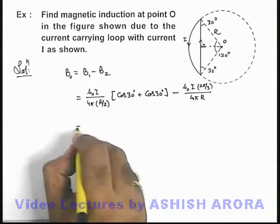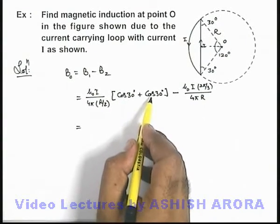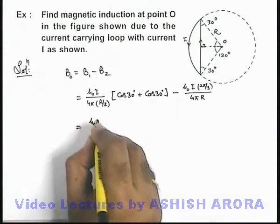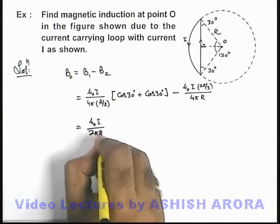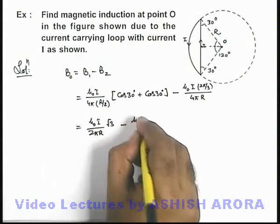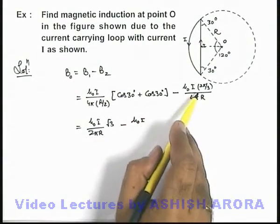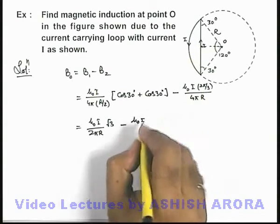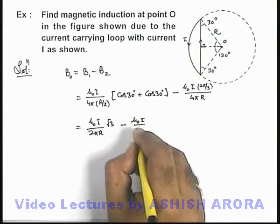Now if we further simplify the results, 2 cos 30 degrees will become √3. So this result will be μ₀I by 2π r multiplied by √3 minus μ₀I. In this situation it is μ₀I by 2r. In this situation it will be 2π by 3. Here 2π gets cancelled out, so it will be μ₀I by 6r.